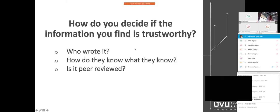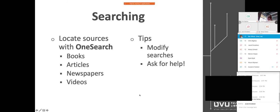Once it's good enough, it gets published — that's what peer-reviewed means. Also, just to clear up confusion: peer-reviewed, scholarly, and academic journals all mean the same thing. For today we're going to use something called OneSearch off the library homepage, which searches for books, articles, newspapers, and videos all in one search.